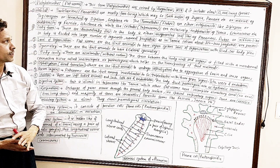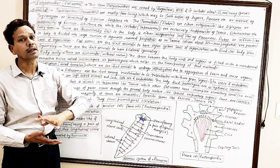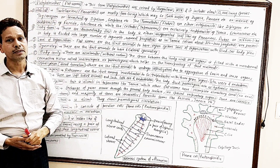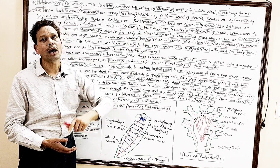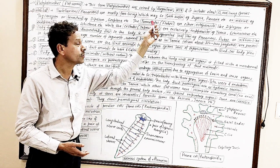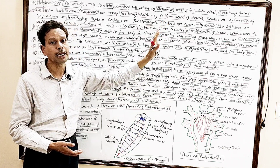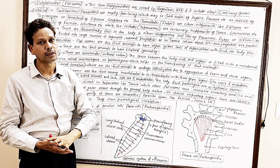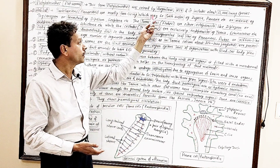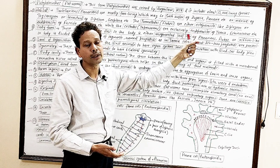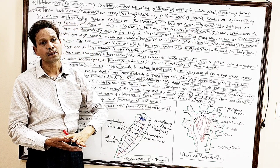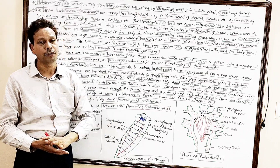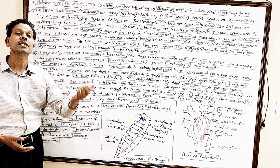The second class of Phylum Platyhelminthes is Trematoda. These trematodes are commonly named flukes — for example, liver flukes such as Fasciola. These trematodes may be ectoparasites or endoparasites. As in the case of liver flukes, that is an endoparasite.